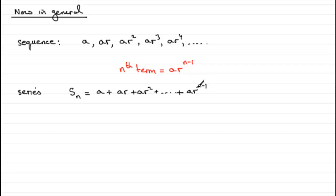The nth term being ar to the n minus 1. And it can be shown that the sum of the first n terms in a geometric progression is given by this formula, a bracket r to the power n minus 1 all divided by r minus 1.